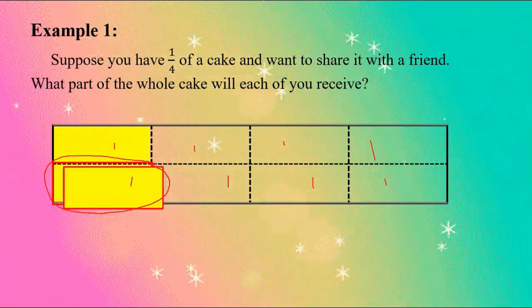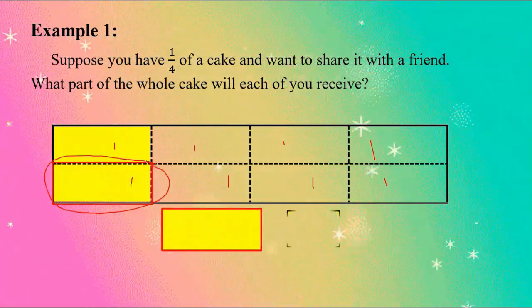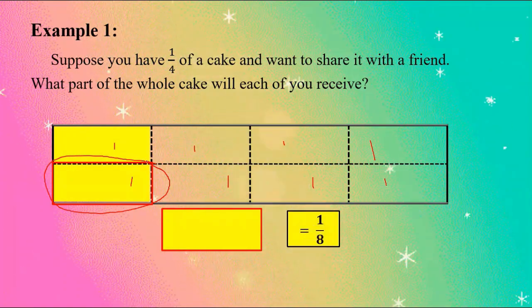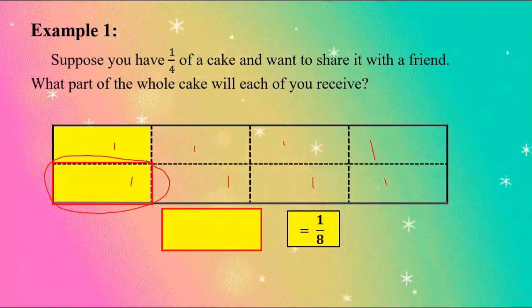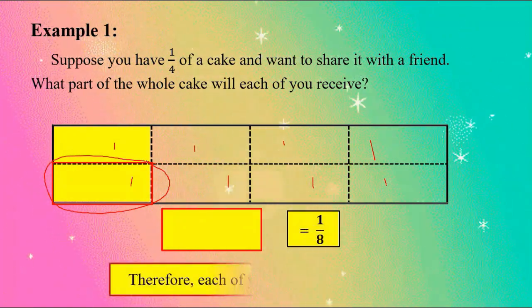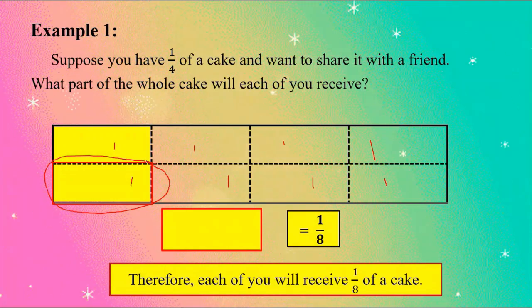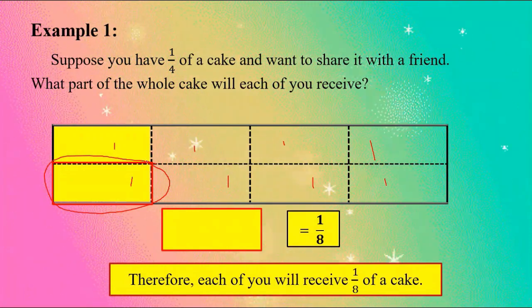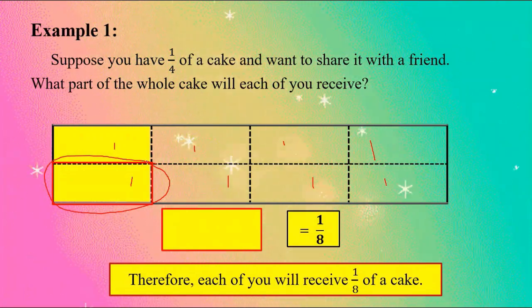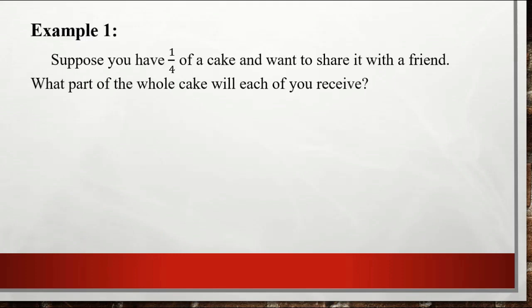Each person's share is one-eighth of the whole cake. Therefore, each of you will receive one-eighth of a cake. We can also verify this by solving using an equation: one-fourth of a cake divided by two.